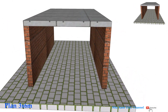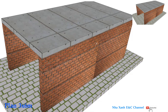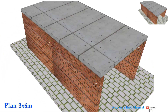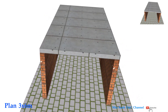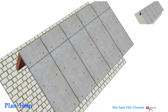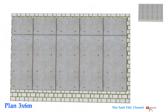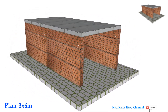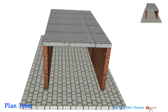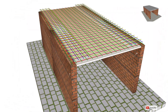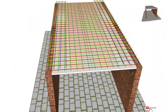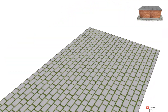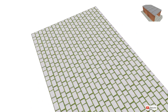Hello everyone, nice to see you again. In this video I want to introduce to you one-way slab. One-way slab is a slab which is supported by beams or brick wall on the two opposite sides to carry the load along one direction. In one-way slab, the ratio of longer span to shorter span is equal to or greater than two.